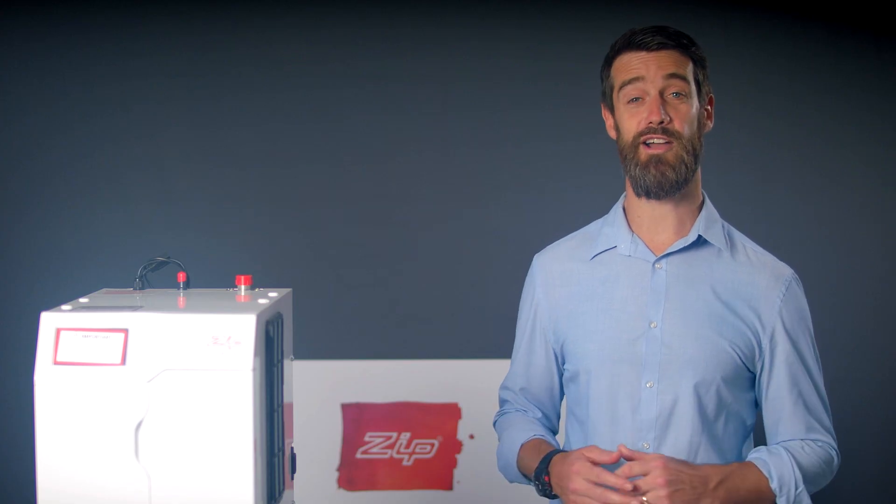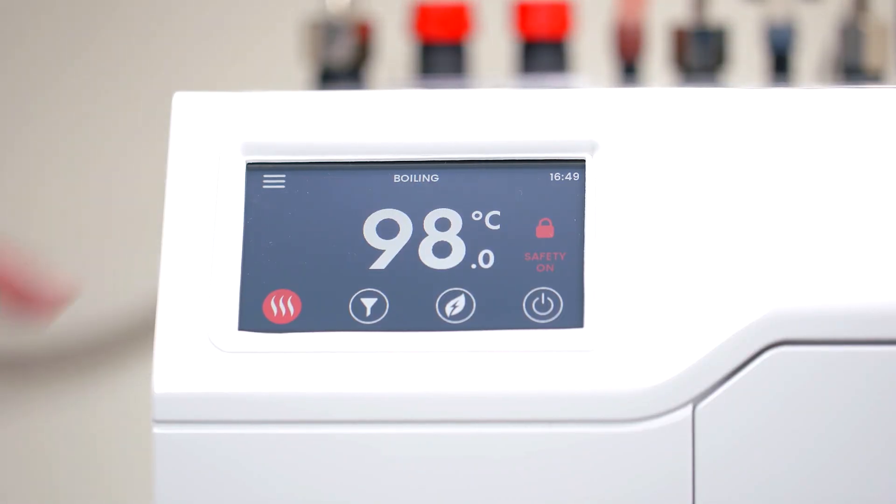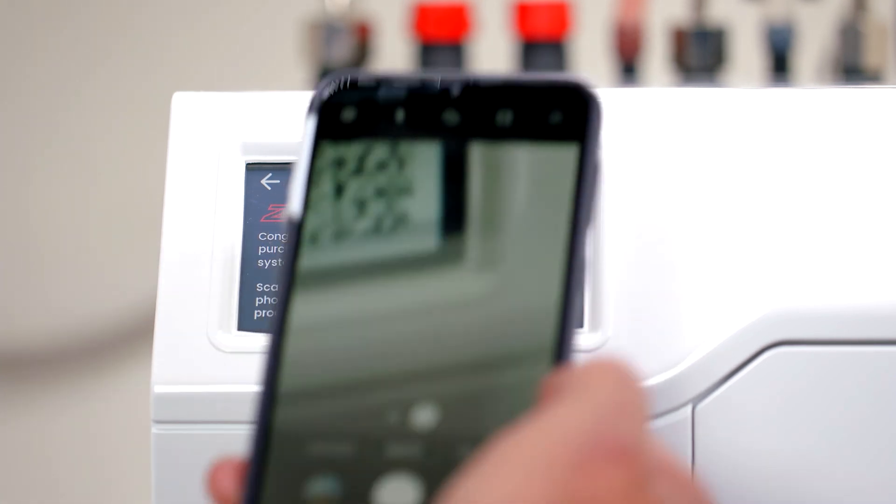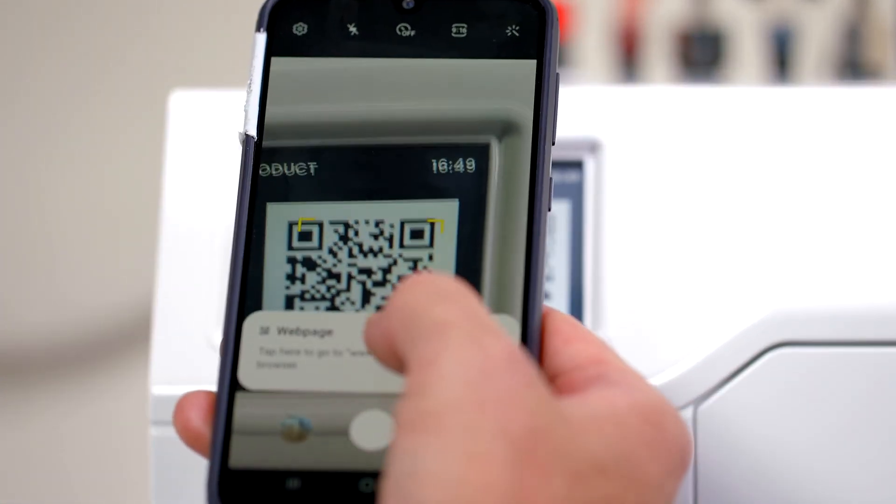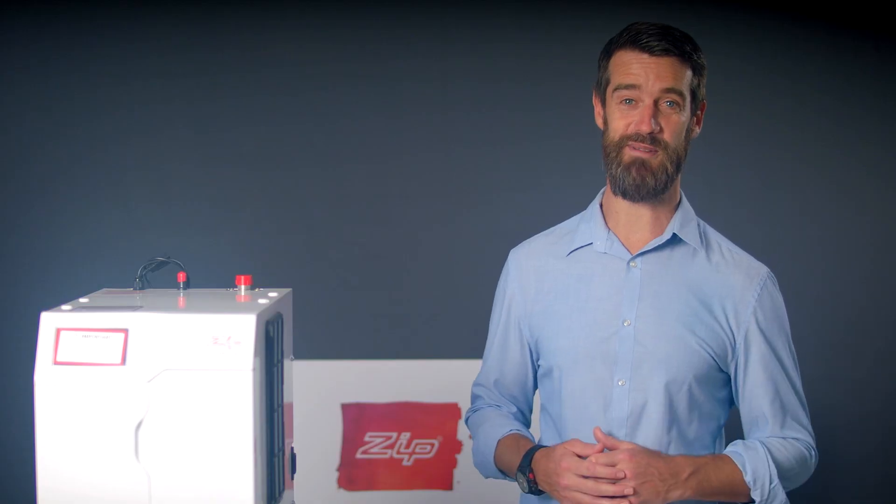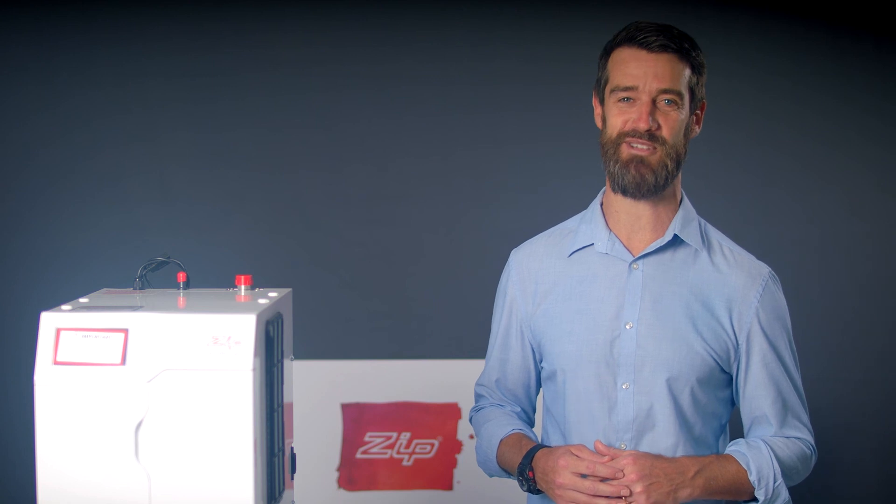You can register your HydraTap via a QR code. To do this press the menu symbol then register product and the QR code will appear on the screen. Use your phone or tablet to scan the code and register your product. Please visit zipwater.com for any further help videos or information on your new HydraTap G5.